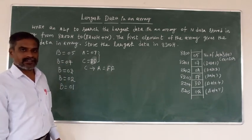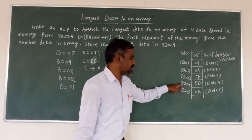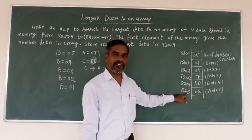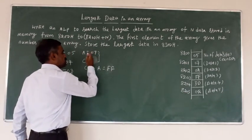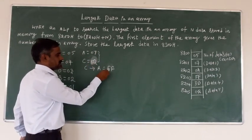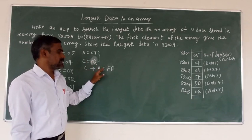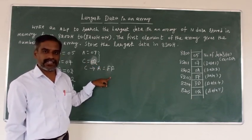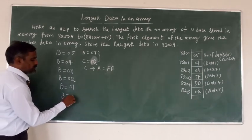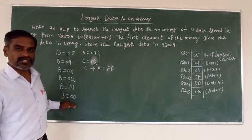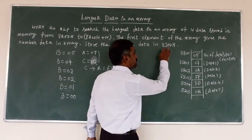Check whether B is zero or not - no, it's 01, so again jump back. Increment memory address from 8204 to 8205. Move the memory data to C register - now C equals 02. Now compare accumulator 0Fh... wait, accumulator is now FH with C register 02. Here the carry flag will be reset because the accumulator content is the largest. So directly decrement B register: now B equals 00.